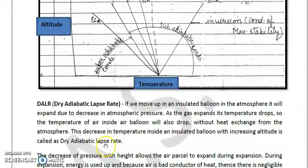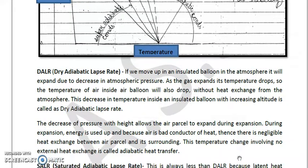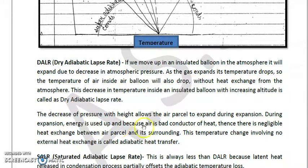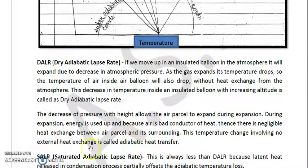More detail can be found in Gilbert and Masters' Introduction to Environmental Engineering. The decrease of pressure with height allows the air parcel to expand. During expansion, energy is used up. Since air is a poor conductor of heat, there is negligible heat exchange between the air parcel and its surroundings — this is why we call it adiabatic, meaning constant heat. This temperature change involving no external heat exchange defines the dry adiabatic lapse rate.